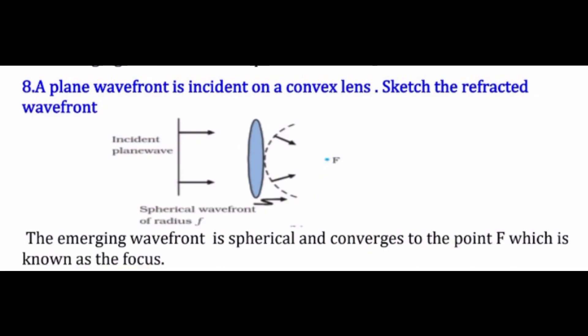The next question is: a plane wavefront is incident on a convex lens — sketch the refracted wavefront. We have a plane wavefront passing through the convex lens. In the case of a convex lens, the center portion is thickest.